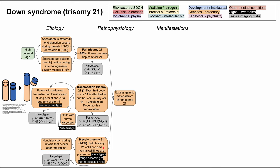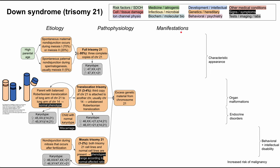Now let's talk about the many manifestations of Down syndrome across organ systems. The manifestations can be grouped into these categories: changes in characteristic appearance, organ malformations, endocrine disorders, mental and behavioral and intellectual disabilities, and an increased risk of blood cancers.